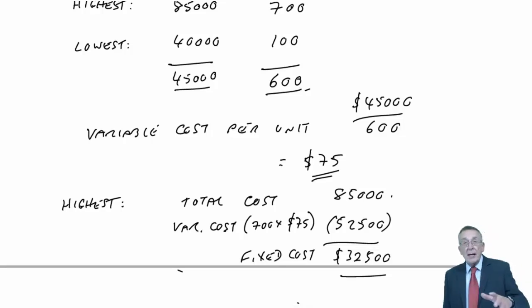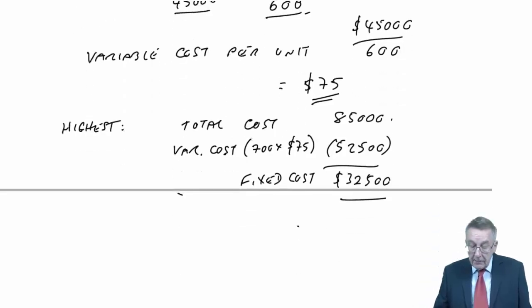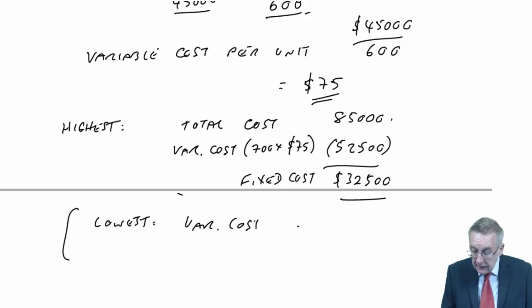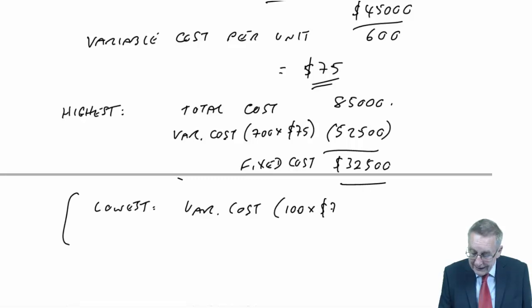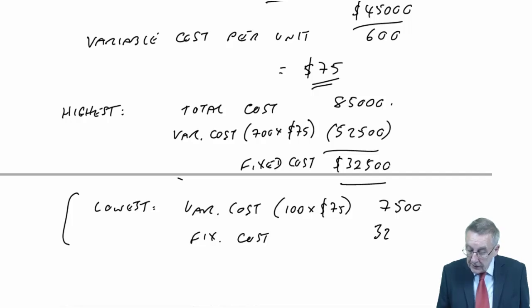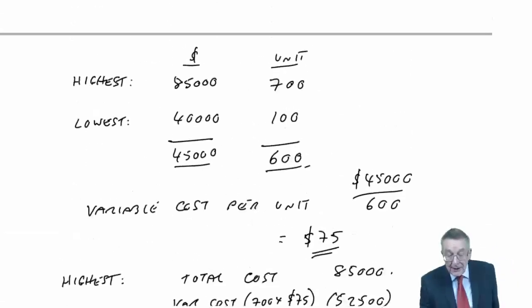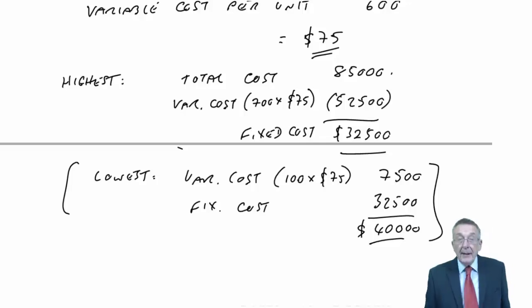And we can actually check that. Although I don't waste time in the exam, for heaven's sake, be confident. But I can check it because if you look at the lowest month, the total variable cost, with the lowest month we produced 100 units, so $75 times 100 is $7,500. In addition, a fixed cost every month, which I'd worked out at $32,500. And so the total cost should be $40,000. And was it? Yes, it was. So you get the fixed cost by looking at either of them. But again, don't waste time in the exam checking in another way.